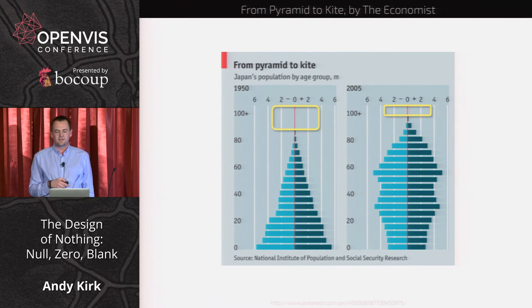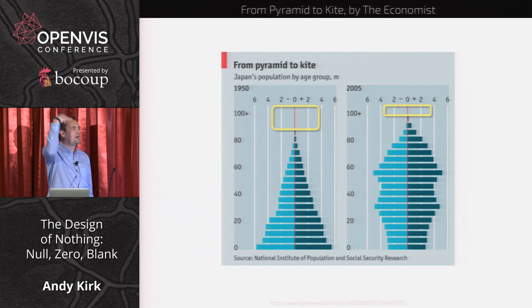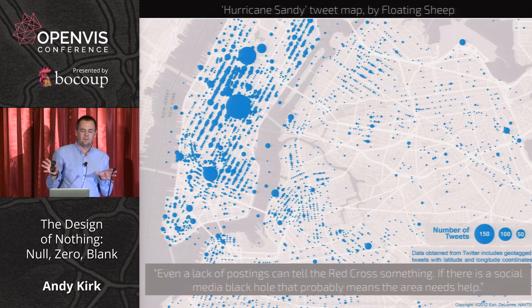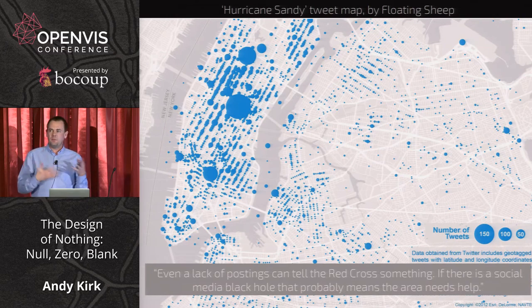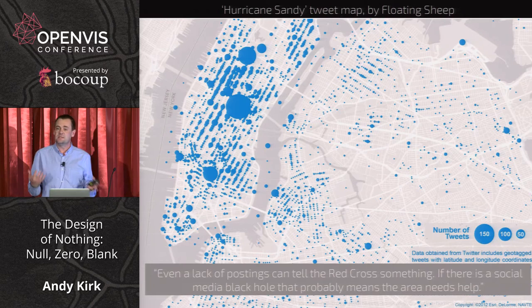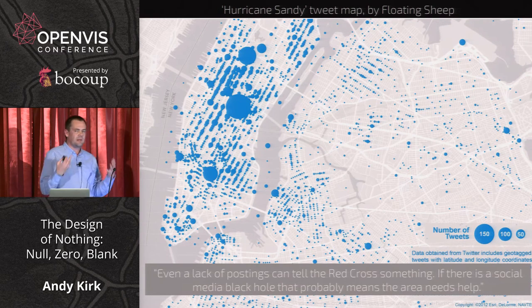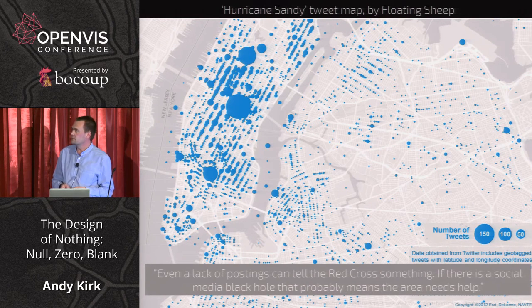The absence of data is also revealing in a pyramid display of human age — the gaps reveal the ceiling of our lifespan. During Hurricane Sandy, the Red Cross was using the absence of social media data to reveal where people were struggling: as people had better things to do than tweet while their buildings were collapsing, areas of social media silence indicated crisis zones. The agency who did that project were called Floating Sheep.